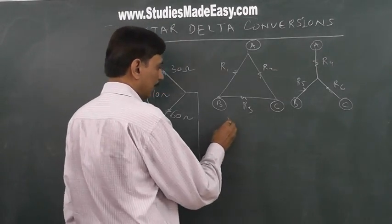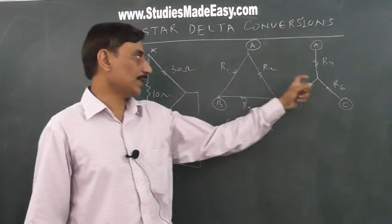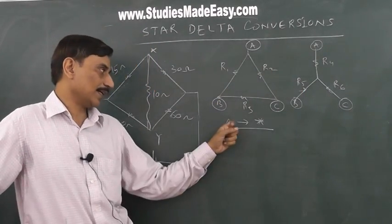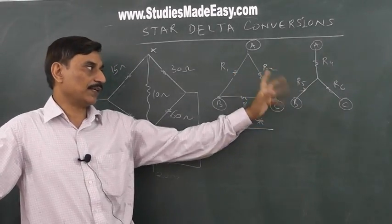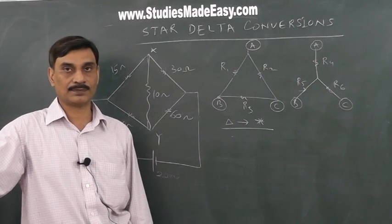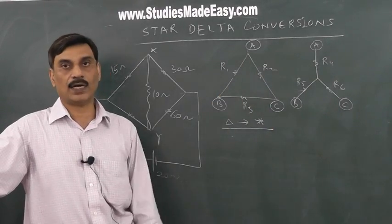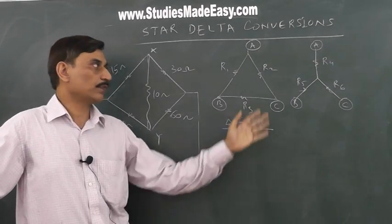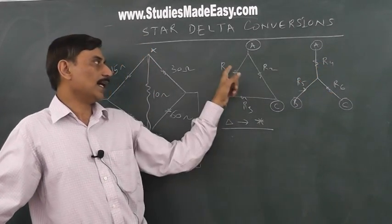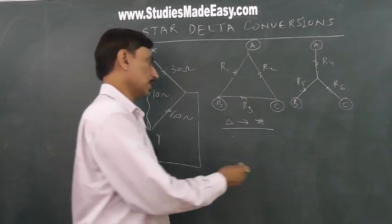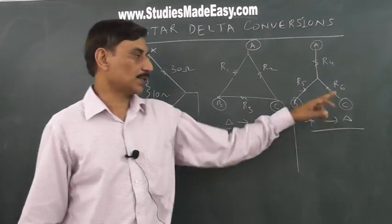If we go from delta to star, the delta resistance values R1, R2, R3 are known and we find R4, R5, R6. If we go from star to delta, the star values R4, R5, R6 are known and we find R1, R2, R3. So the conversion can be delta to star or star to delta.